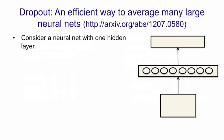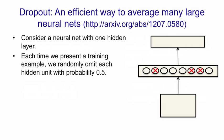Now I want to describe an efficient way to average a large number of neural nets that gives us an alternative to doing the correct Bayesian thing. The alternative probably doesn't work quite as well as doing the correct Bayesian thing, but it's much more practical. Consider a neural net with one hidden layer. Each time we present a training example to it, we randomly omit each hidden unit with a probability of 0.5. So we run the example through the net with those hidden units absent.